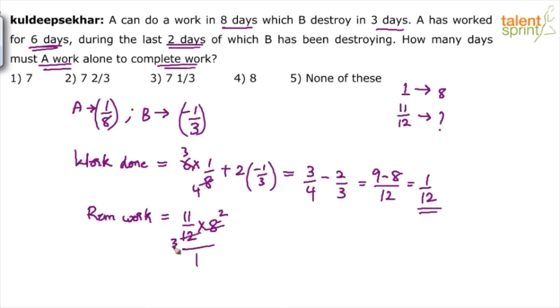So it's like 22 by 3. 22 by 3 can also be taken as 7 1 by 3. 21 plus 1 by 3 - 21 by 3 is 7 and 1 by 3 is 1 by 3. 7 1 by 3, option 3 will be the answer.